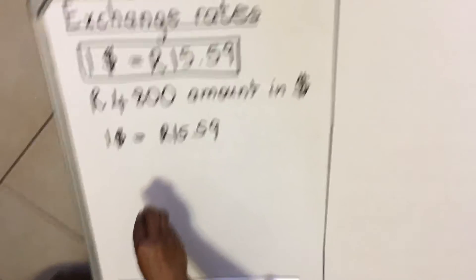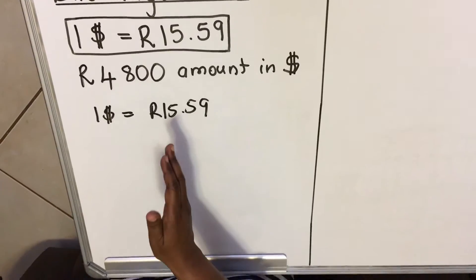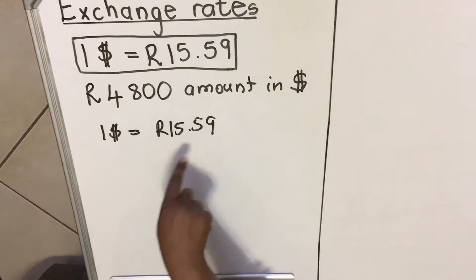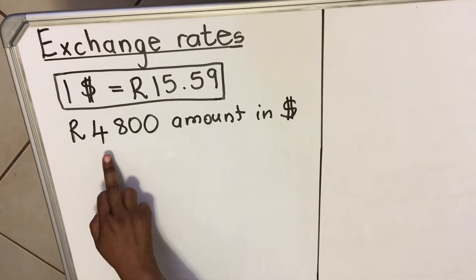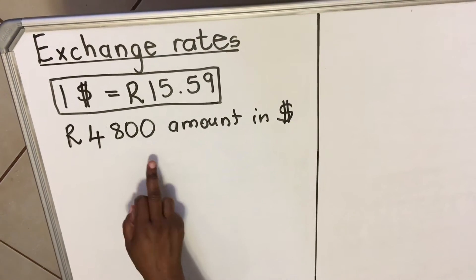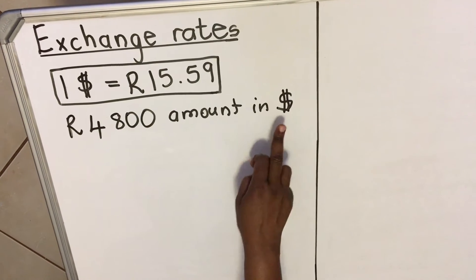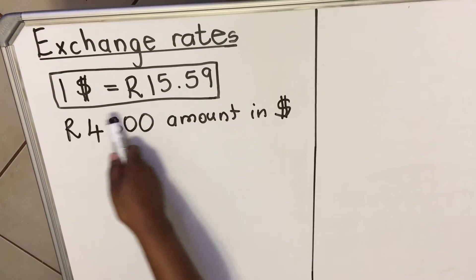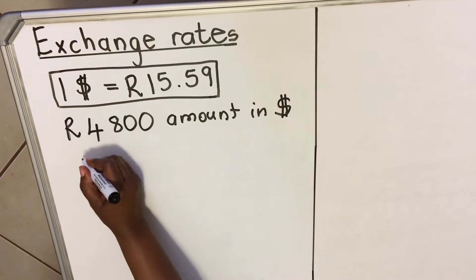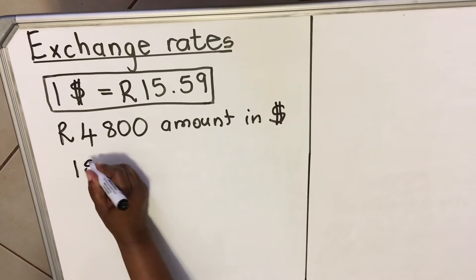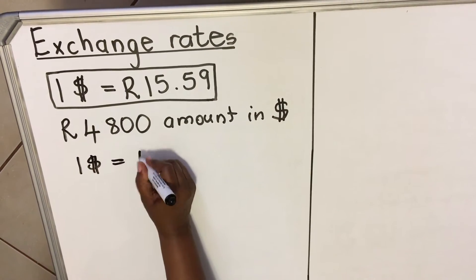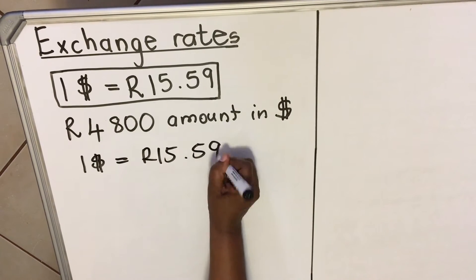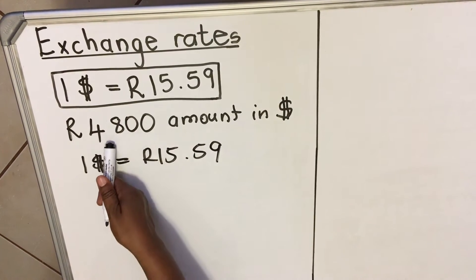I'm going to show you a method that I think is easier. For the first example, when you have 4800 rand and you want to change it into dollars, you first write the exchange rate you are given — as you would be given in an exam. For example: one dollar equals 15 rand 59 cents.